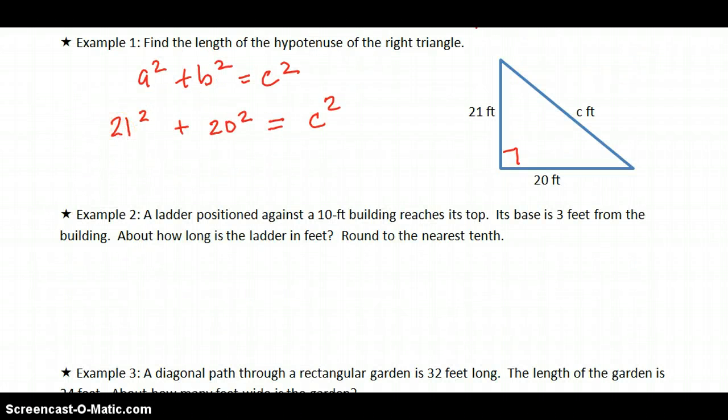21 squared is going to give us 441 plus 20 squared, which is 400, equals C squared. And 441 plus 400 is 841 equals C squared. So we're right back to what we were doing in the previous lesson, where we're undoing the square. So we have to take the square root to undo the square. So C is positive or negative, and you can use your calculator here, and get 29.